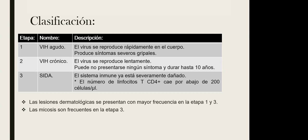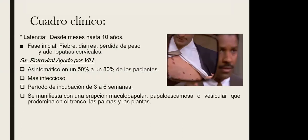El cuadro clínico hace énfasis en la latencia, que puede durar hasta 10 años. La fase inicial puede incluir fiebre, diarrea, pérdida de peso e incluso adenopatías cervicales. En el VIH agudo se puede presentar el síndrome retroviral agudo. En la mayoría de las ocasiones es asintomático, entre el 50 y 80% de los pacientes, pero durante esta etapa el VIH va a ser más infeccioso. Para que se presente este síndrome hay un periodo de incubación del virus de 3 a 6 semanas.